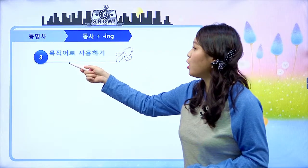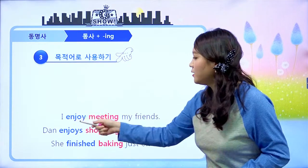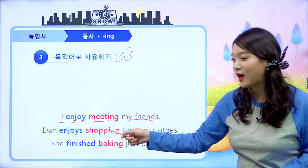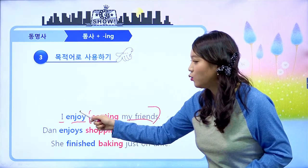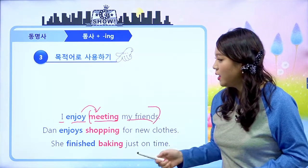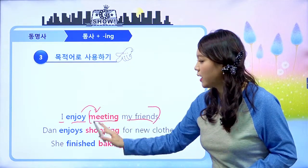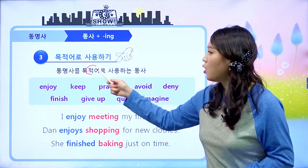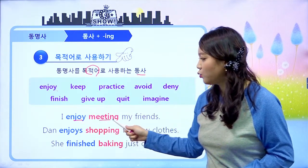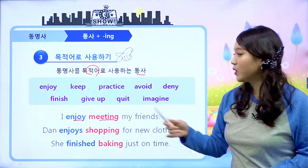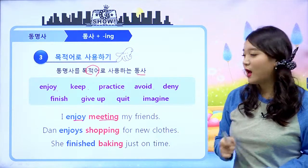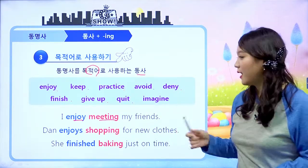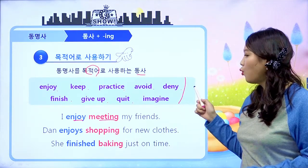세 번째, 목적어로 사용하기 — I enjoy meeting my friends, 나는 나의 친구들을 만나는 것을 즐긴다. Meeting my friends가 동사 enjoy의 목적어가 됩니다. 동명사를 목적어로 사용하는 동사들이 있는데: enjoy(즐기다), keep(유지하다), practice(연습하다), avoid(피하다), deny(거부하다), finish(마치다), give up(포기하다), quit(중단하다), imagine(상상하다) 이런 동사들은 뒤에 동명사가 옵니다.